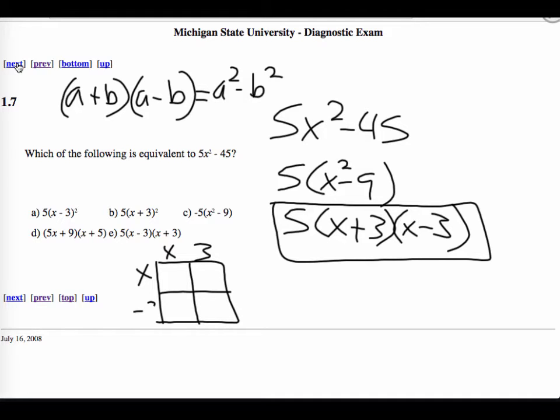So if I say x plus 3 times the quantity x minus 3, x times x equals x squared. 3 times x is 3x. x times negative 3 is going to be negative 3x. And then negative 3 times positive 3 is a negative 9.